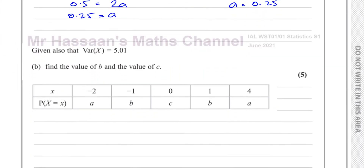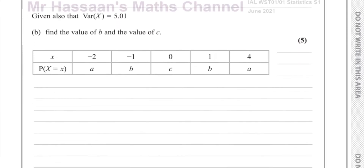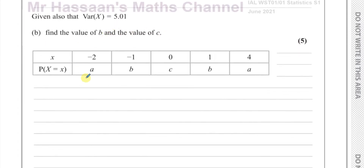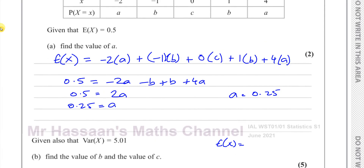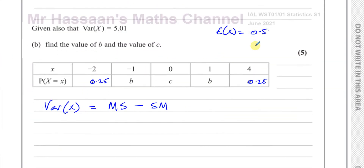Now for part B. It says, given also that the variance of X is 5.01, find the value of B and C. We now know A is 0.25 in both positions. We know the variance of X equals the mean of the squares minus the square of the mean. The expected value of X was 0.5, so the square of the mean is 0.5 squared.